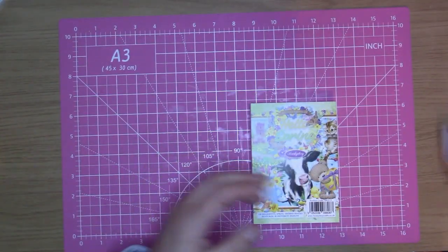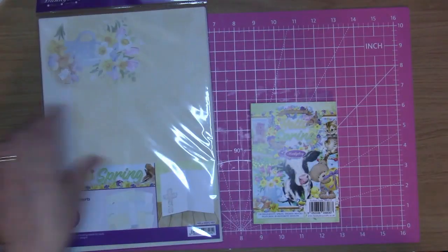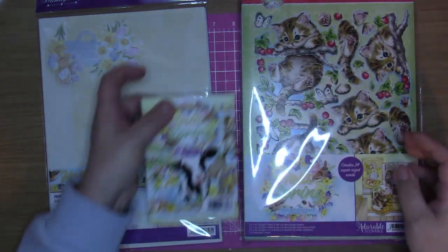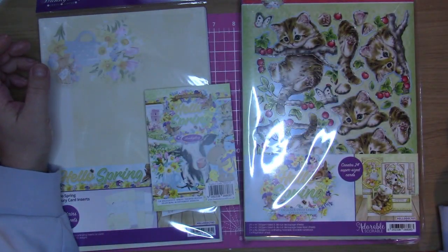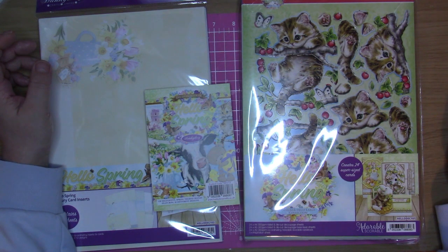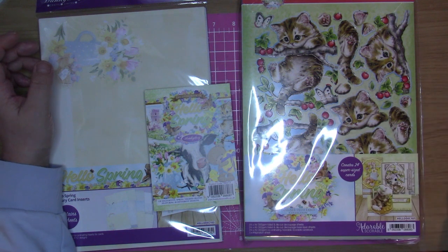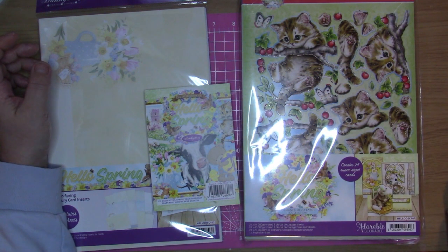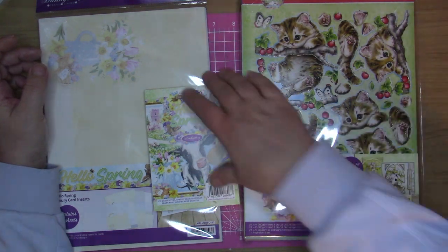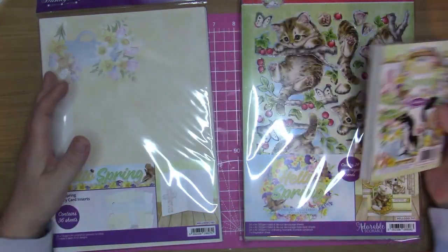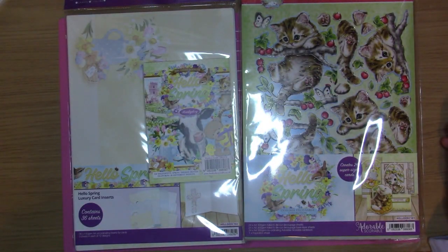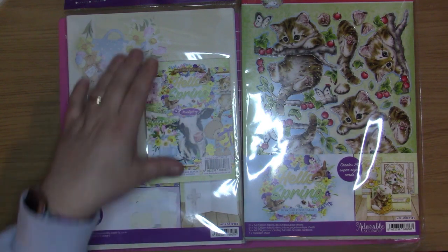On to the Hello Spring Decoupage. I originally wasn't going to get this, but then I decided there were some designs that I really liked. Rather than spending the money just to get a few of them, I thought I might as well just get the whole kit. It's easier that way. This was about £35, so to make it over the £40 I added a few extra bits as you do.